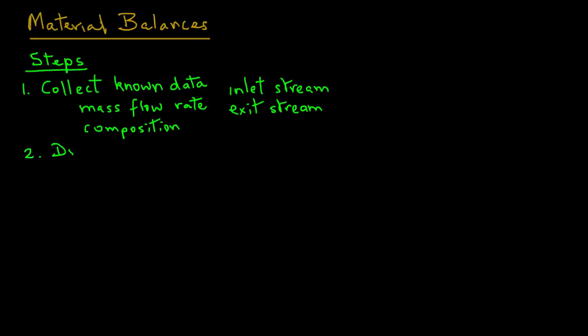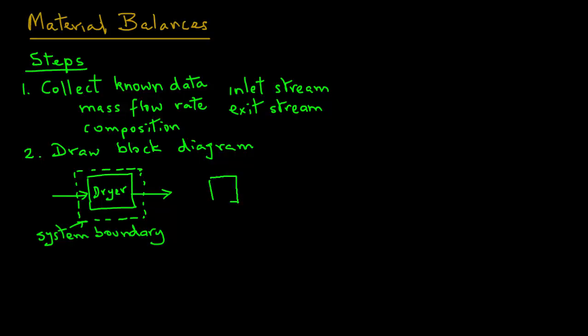Two, we will draw what is called a block diagram. This is just simple blocks drawn to indicate the process with inlet and exit streams that are identified in that diagram. We will use arrows to indicate a stream going into the equipment as well as an arrow that shows the exit from that piece of equipment. And we will draw a system boundary around that piece of equipment that we are trying to conduct a material balance on. Now, if in a process there are a number of pieces of equipment, then it is important that the system boundary encloses all those pieces of equipment.